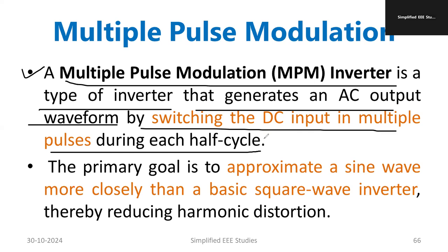Suppose we have four switches S1, S2, S3, S4. One pair of switches should be turned on and you need to operate one pair of switches at a time. The other pair will be operated in another half cycle. Whenever you are operating one pair of switches, each and every half cycle the pulses will appear in this fashion — instead of a single pulse, we are going to use multiple pulses.